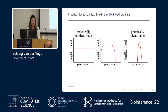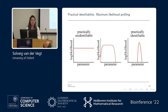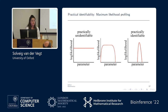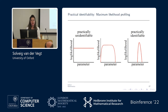What might these profiles look like? If the profile is completely flat, the parameter is practically unidentifiable. If it is sharply peaked, the parameter is identifiable and you can confidently estimate its value. You can also get a plateau result where you can't estimate the exact value but can set upper or lower limits on where that value might be.